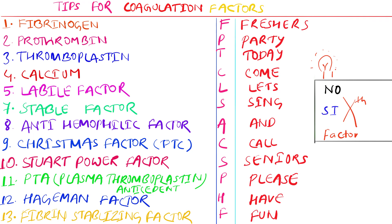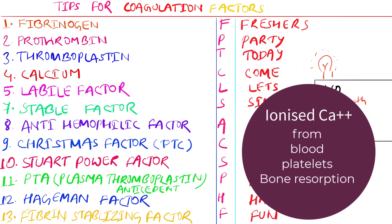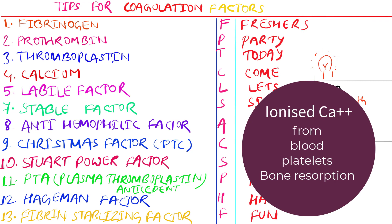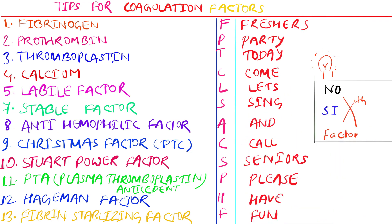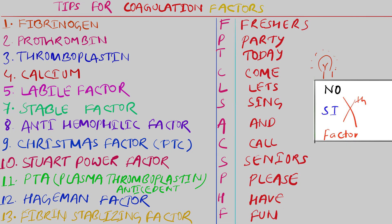Fraser stands for fibrinogen. Party stands for prothrombin. Today stands for thromboplastin. Come is for calcium — and this is ionized calcium, it is in ionized form. Let's stands for labile factor. Now be careful: I have already told you that the sixth factor is the missing one — it doesn't exist or hasn't been discovered yet.